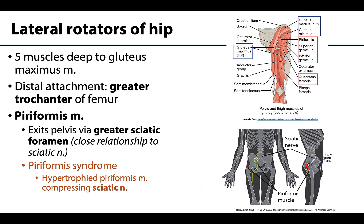Last but not least are the deepest muscles in the posterior hip region, often referred to as the lateral rotators of the hip. These are smaller muscles, most of which have a distal attachment on the greater trochanter, similar to the gluteus medius and minimus. As the name implies, these muscles predominantly laterally rotate the hip joint, with some also playing a role in abduction.